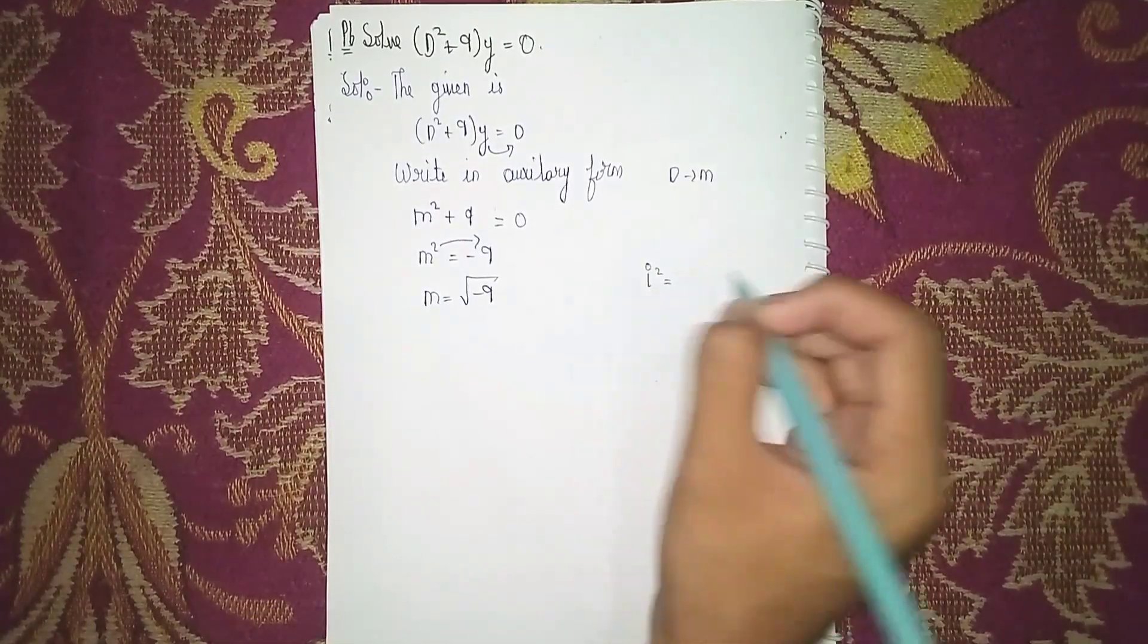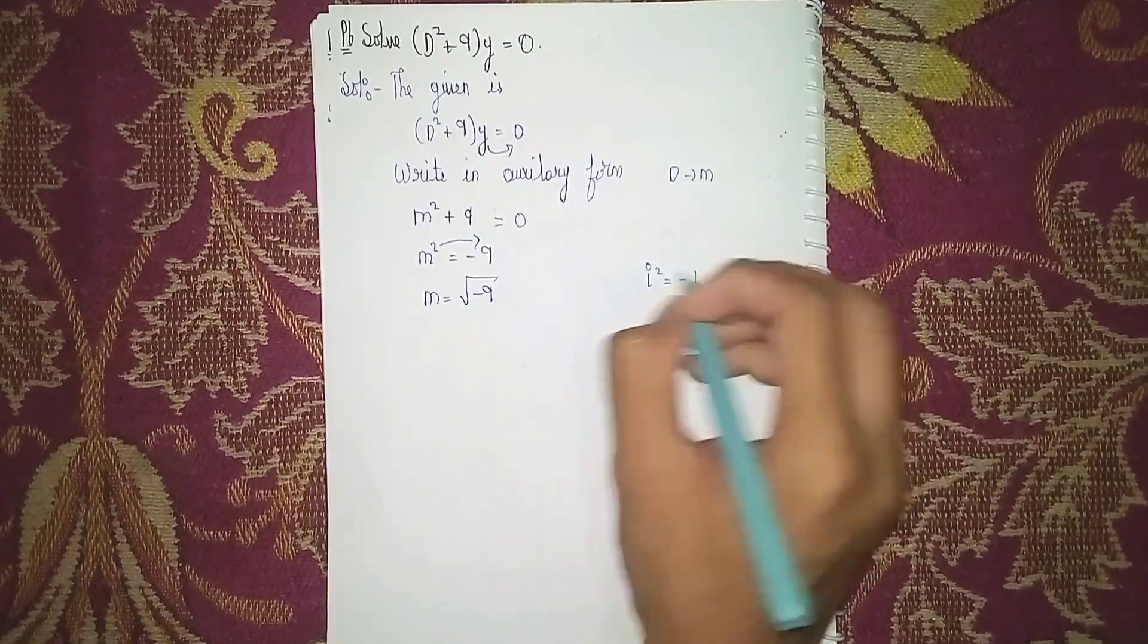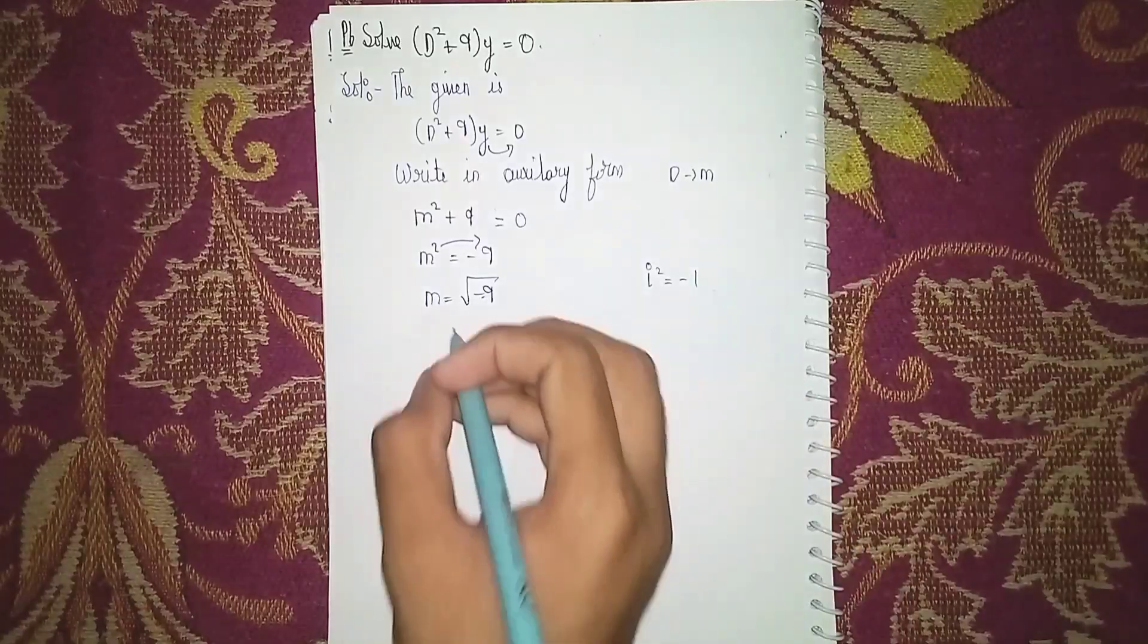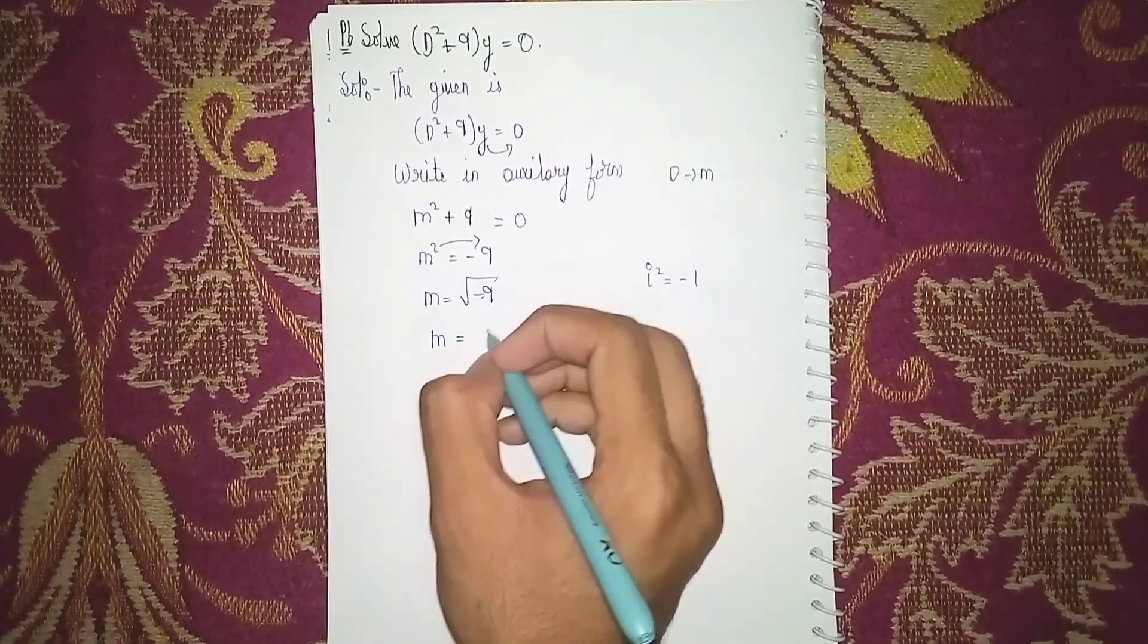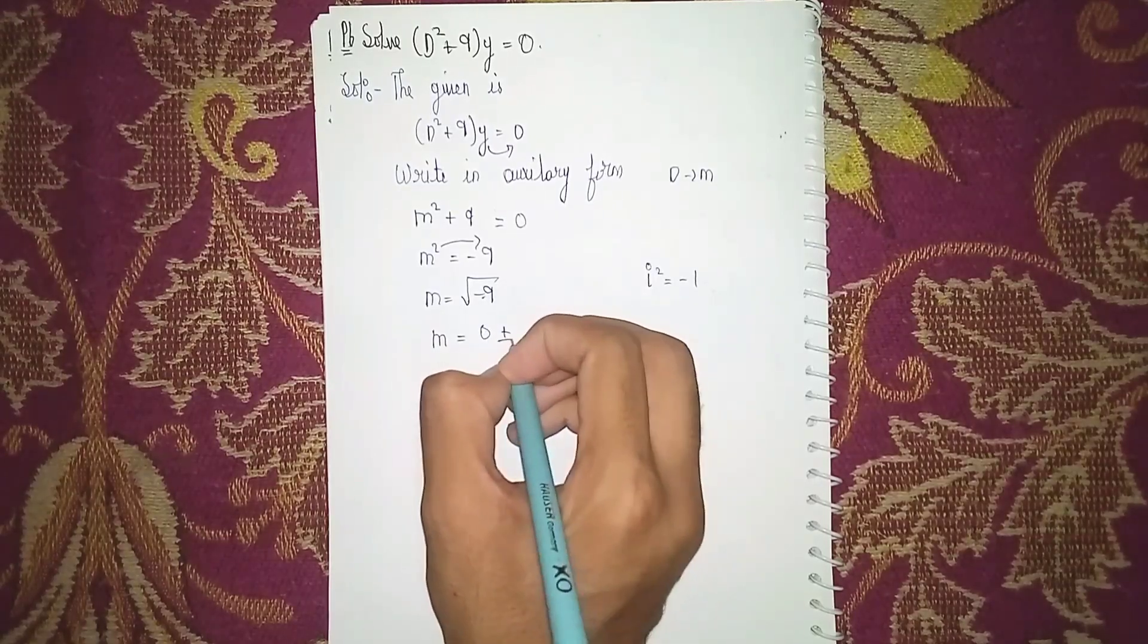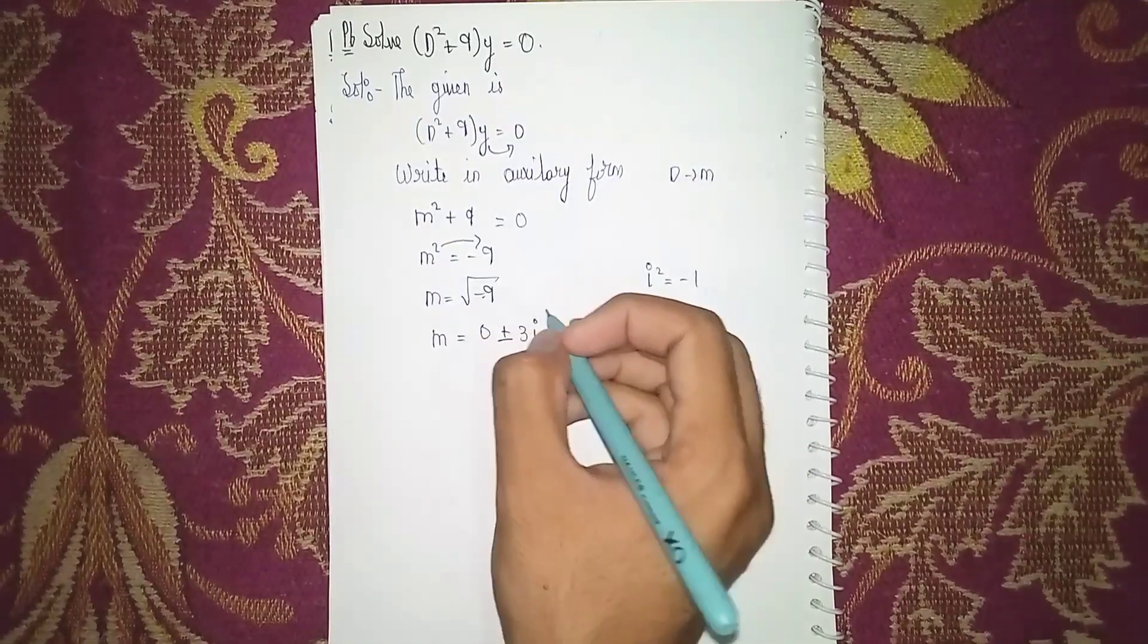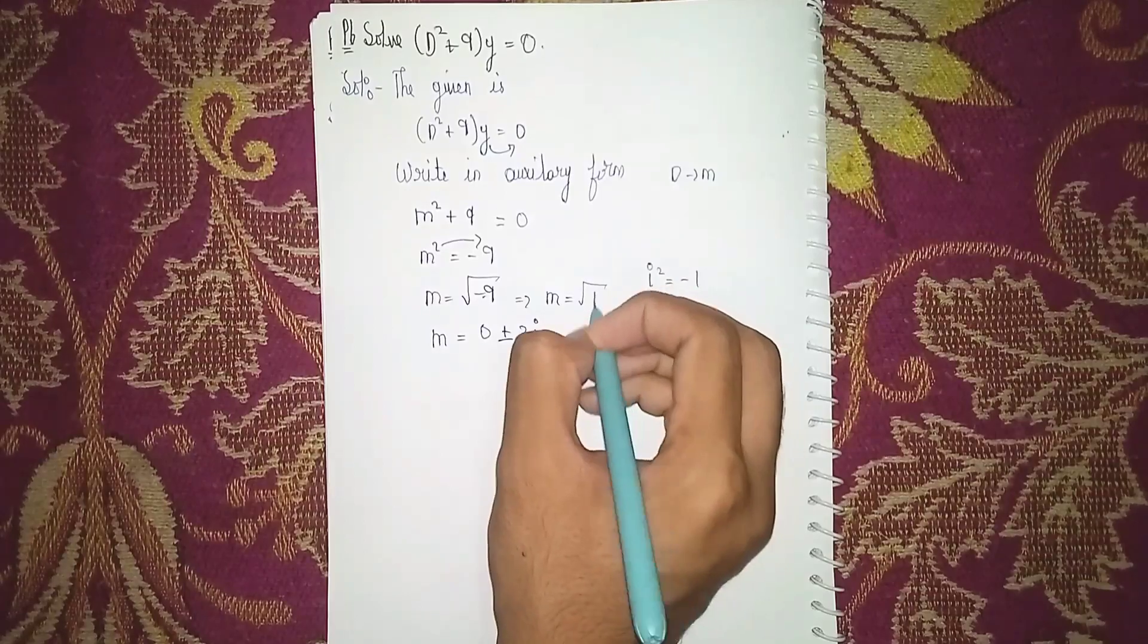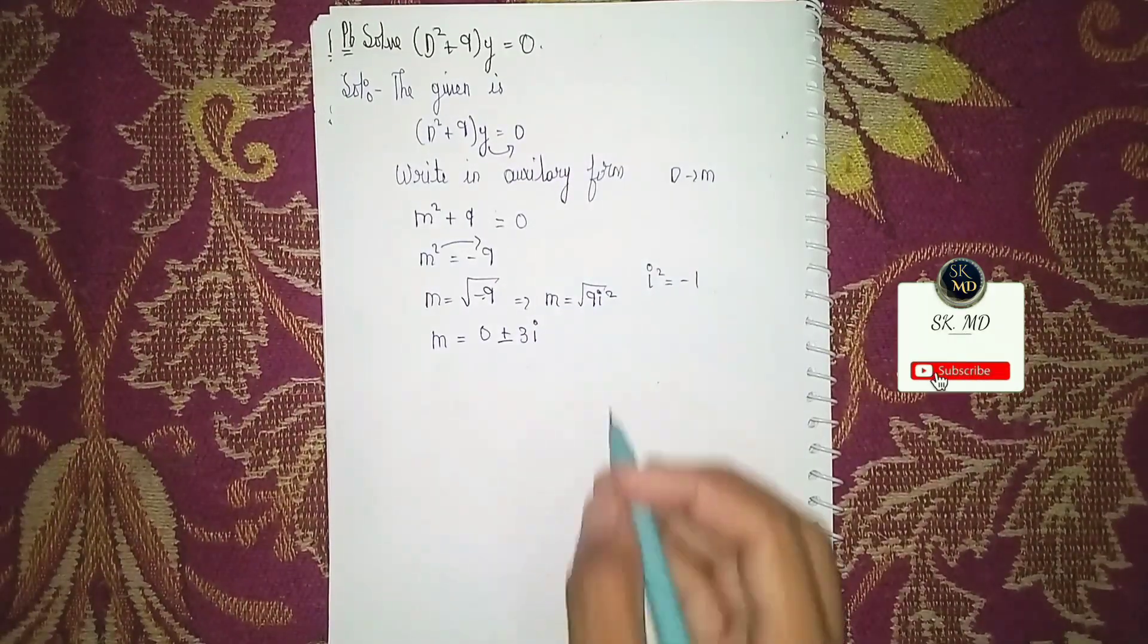i² = -1. We can take -9 as -1 × 9. This becomes m = √(9i²). For i² we don't have the value.